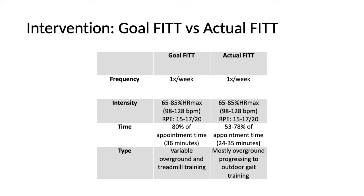Comparing the goal fit to the actual fit: frequency was maintained at once per week during the plan of care. The goal for intensity was met at 65 to 85% of the patient's heart rate max or an RPE of 15 to 17 out of 20. About 24 to 35 minutes was spent on high-intensity gait training compared to the goal of 36 minutes of a 45-minute appointment. The treatment involved mostly overground gait training, including progression to outdoor gait training.